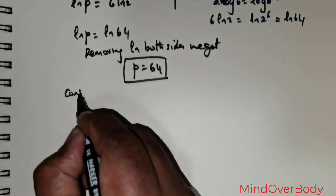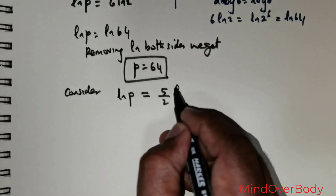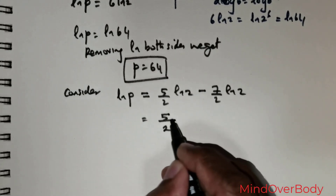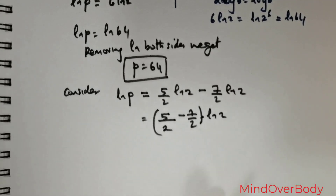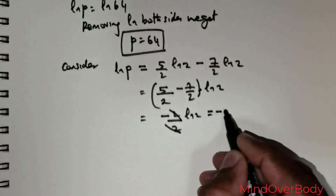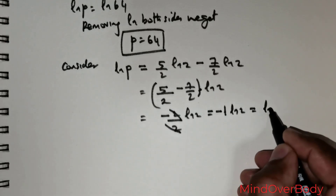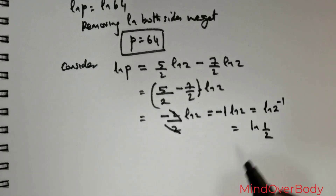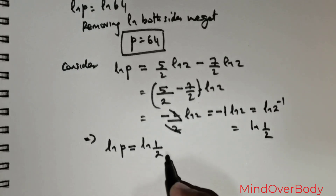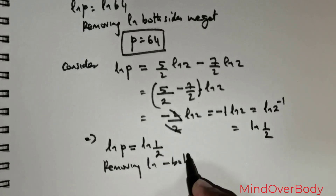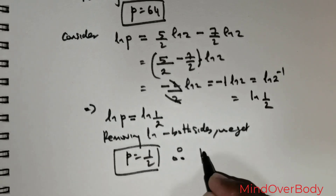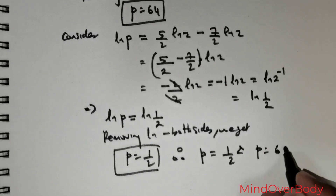For the next value, taking the negative sign: ln(p) = 5/2·ln(2) − 7/2·ln(2). Taking ln(2) as a common factor: (5/2 − 7/2)·ln(2) = −2/2·ln(2) = −1·ln(2) = ln(2⁻¹) = ln(1/2). So ln(p) = ln(1/2), which gives p = 1/2. Therefore we have two values: p = 1/2 and p = 64.